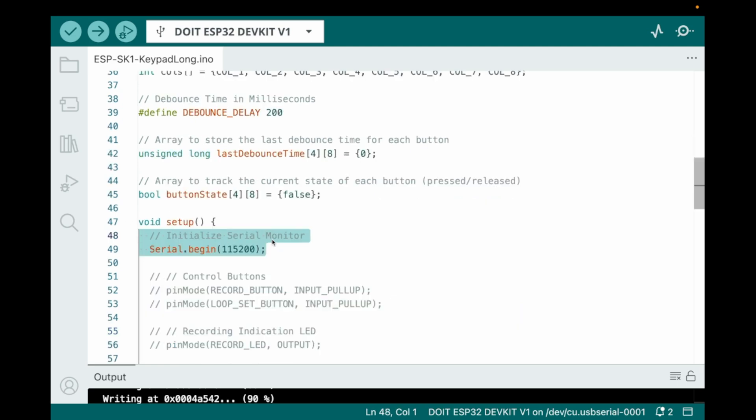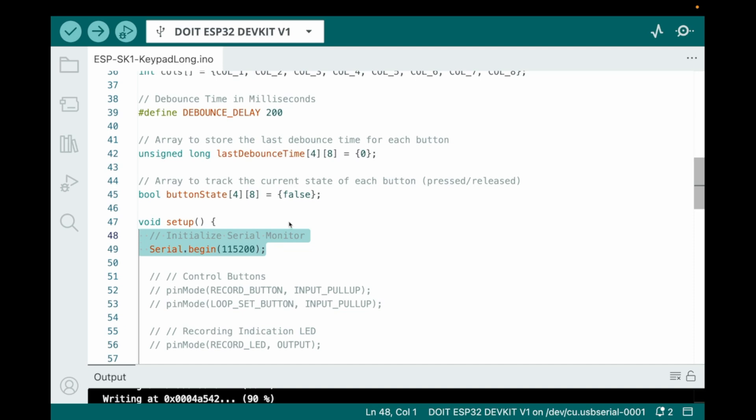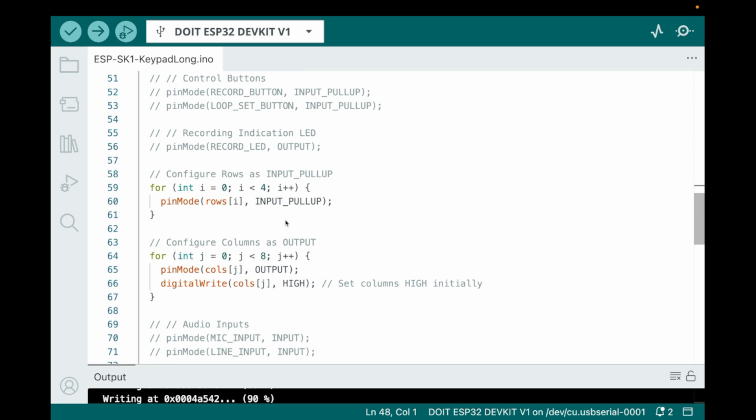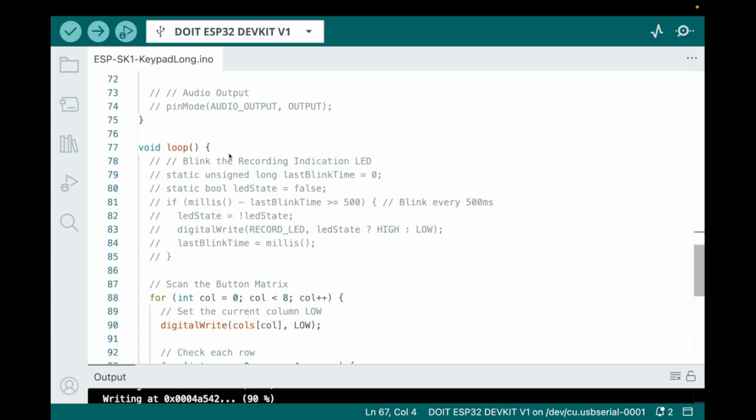Next, we have our serial monitor set up. This is just used for debugging, so we can actually print something when a button is being pressed. Let's keep going down. And then we've got a for loop here, which is just configuring all of our rows as inputs with the pull-up resistor enabled on each of those inputs. Then we have a for loop configuring all the columns as outputs, and we're going to set those columns as high initially.